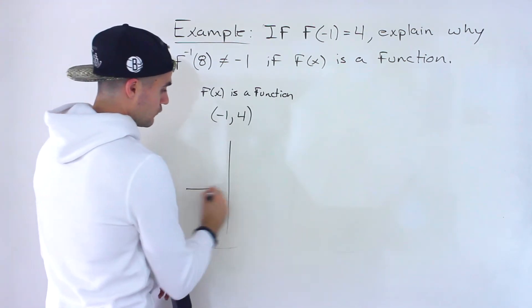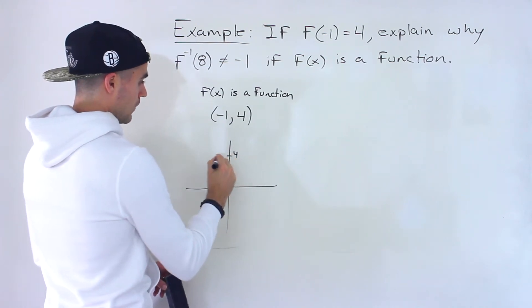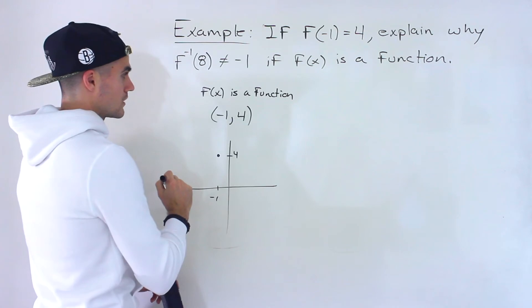If we draw that out visually, it means that I have an x value of negative 1 and a y value of 4—there's a coordinate right there.